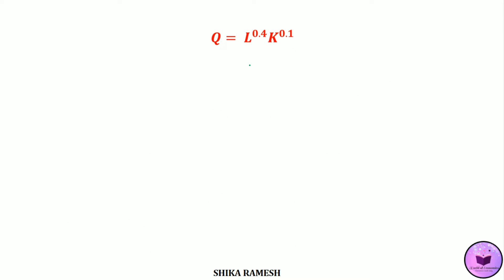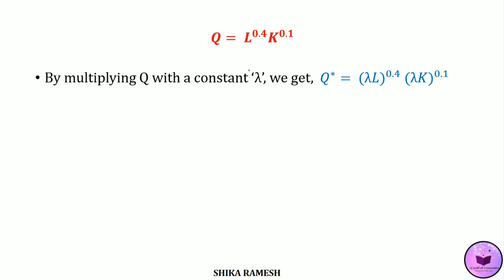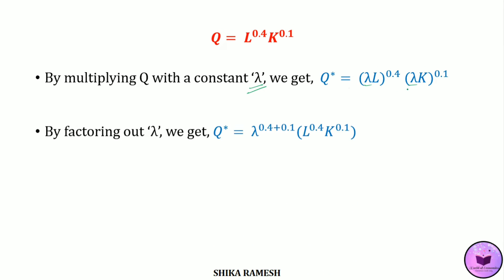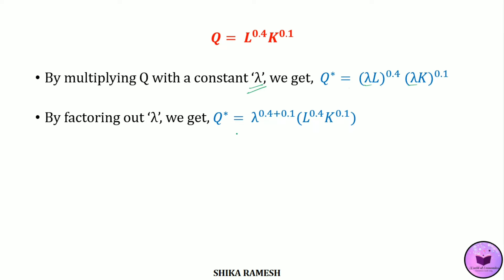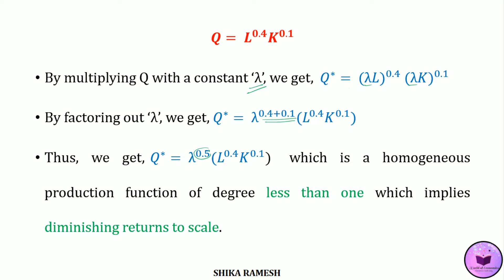Let's see another example: Q = L raised to 0.4 times K raised to 0.1. We multiply the production function with a constant lambda, giving Q* = (λL)^0.4 × (λK)^0.1. Simplifying and factoring out the constant, we get Q* = λ raised to (0.4 + 0.1) times L^0.4 K^0.1. Since the value of N equals 0.5, which is less than 1, this production function implies diminishing returns to scale.